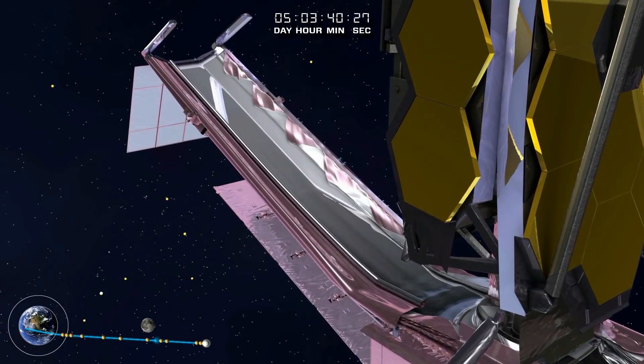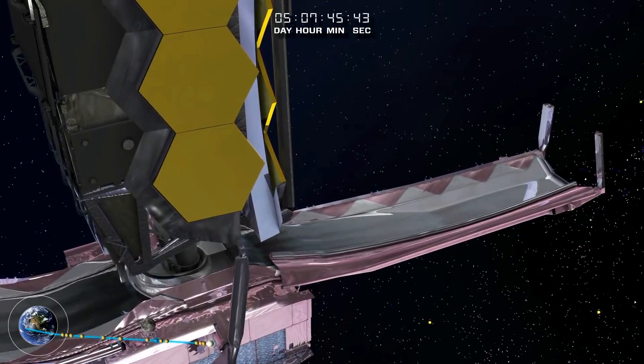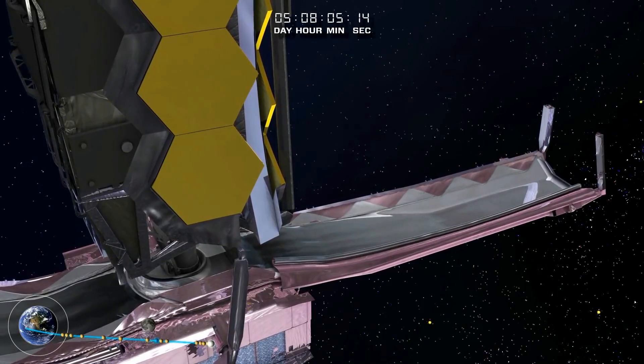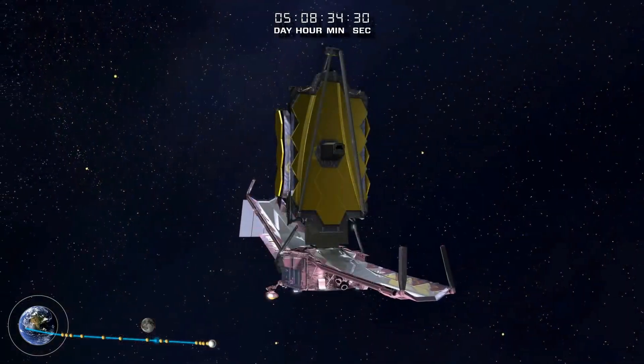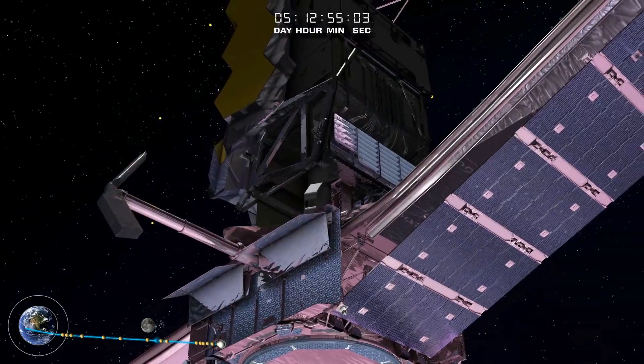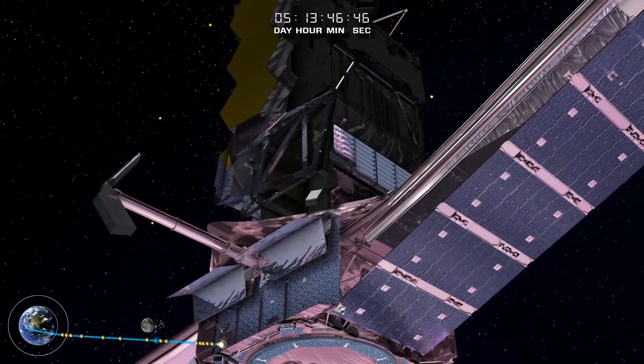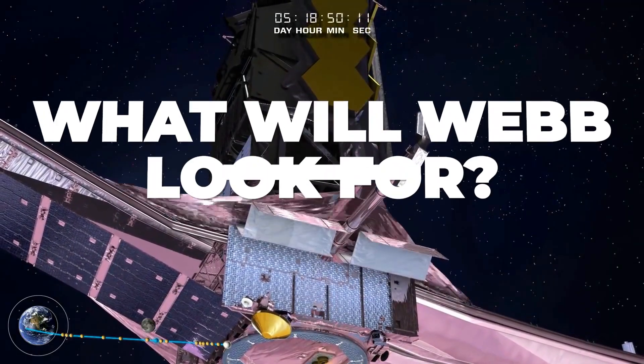Webb uses mirrors that capture six times more light than Hubble's, and cameras with a 15 times wider view. Hubble orbits the Earth at an altitude of 340 miles. Webb will be positioned out in space roughly four times farther away from the Earth than the Moon for maximum light gathering.